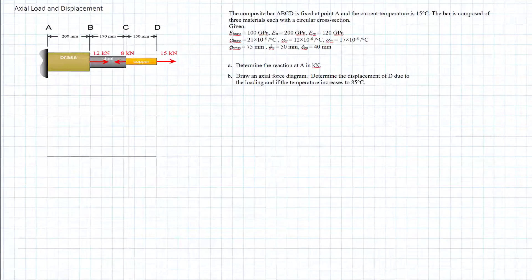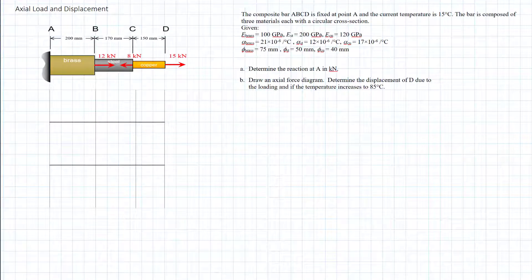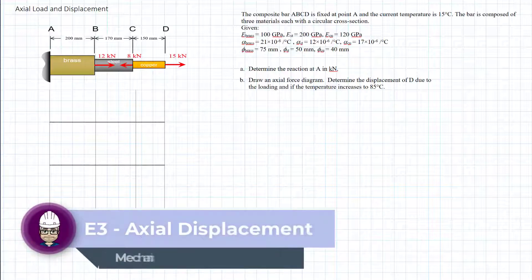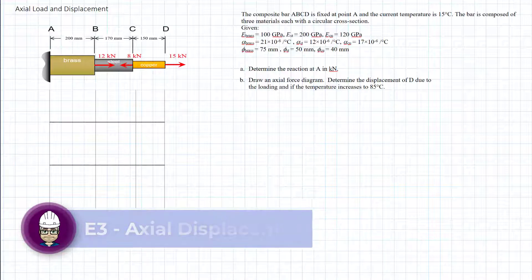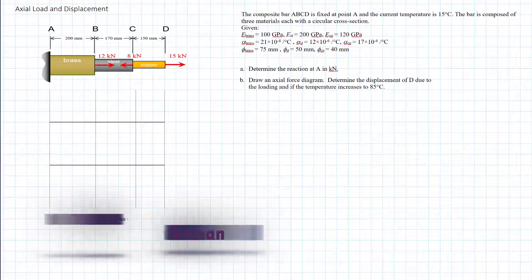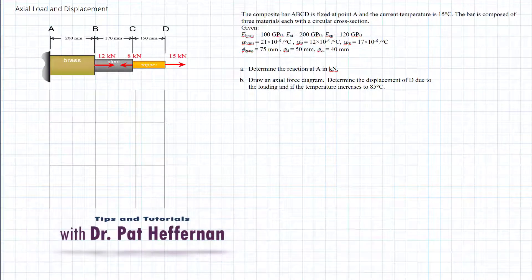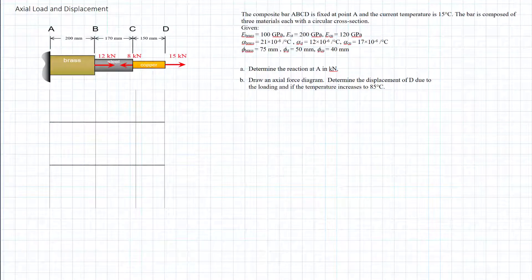Hey, how are you doing? So we have an axial loaded problem. It's a composite section, so it has three different materials in three different diameters over three different lengths, all connected. The composite bar ABCD is fixed at point A, otherwise freestanding, so it's a determinate problem. It has a current temperature of 15 degrees Celsius, and the bar is composed of three materials, each with a circular cross-section, as shown in the diagram.